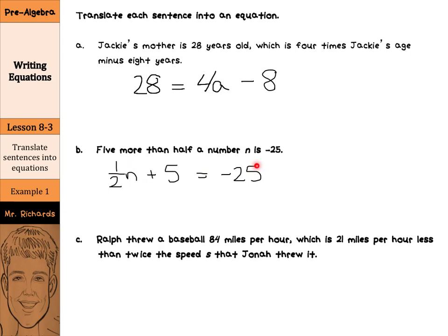Ralph threw a baseball 84 miles per hour, which is 21 miles per hour less than twice the speed S that Jonah threw it. When they start to get this long, it is okay to just kind of break it apart. We have our 84 miles per hour, we have our 'is,' and we have 21 miles per hour less than twice the speed S that Jonah threw it.